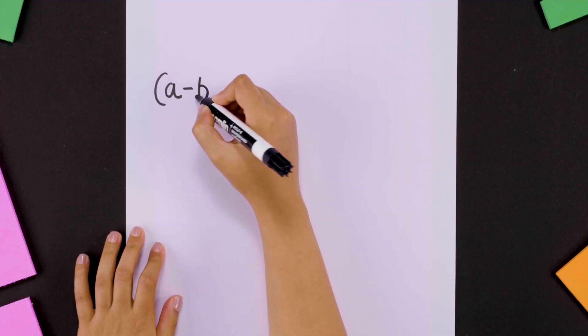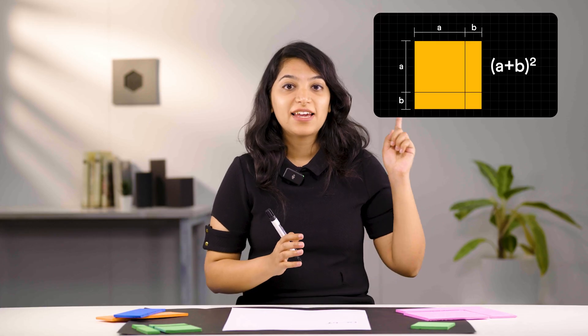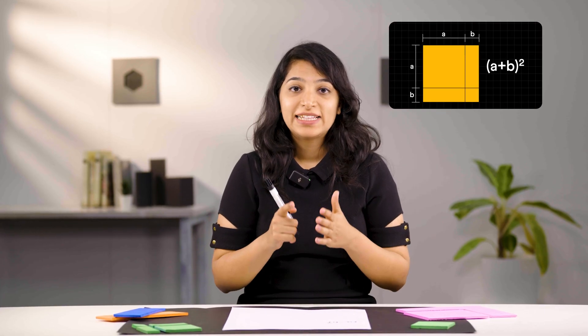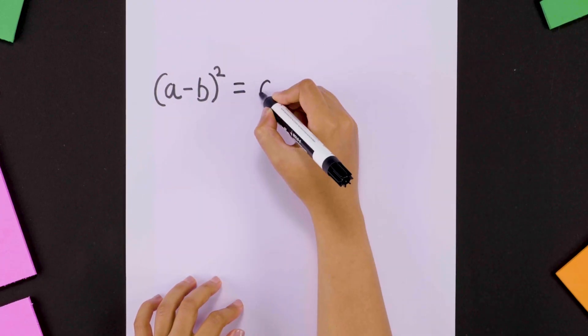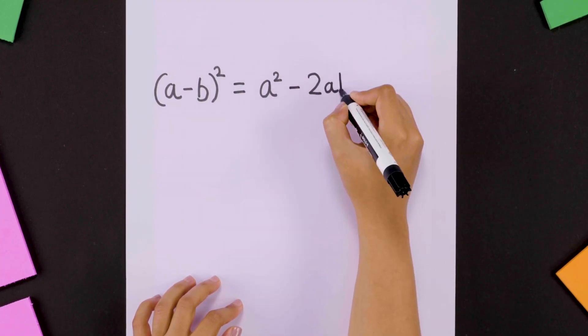What is a-b whole squared? Just like a+b whole squared, this is also a well-known identity which equates to a squared minus 2ab plus b squared.